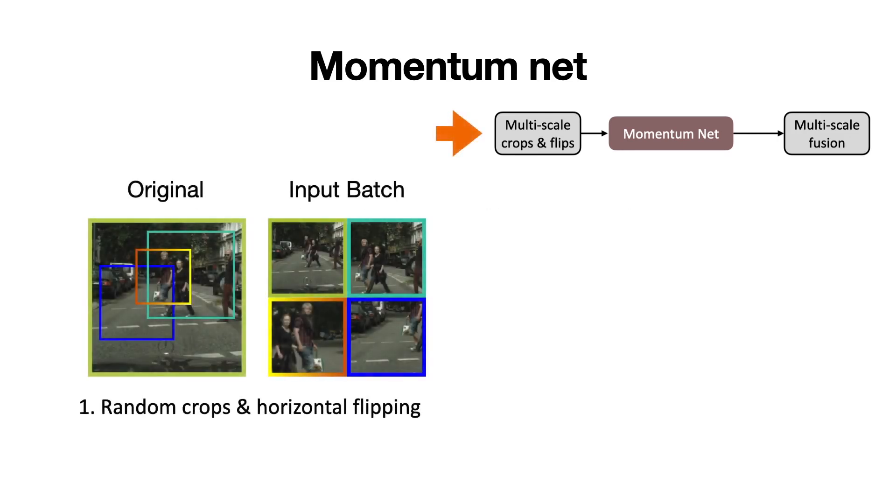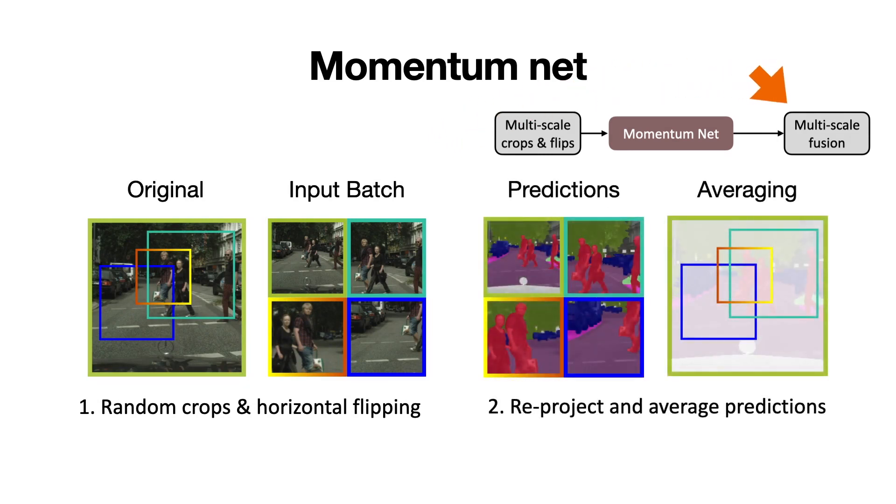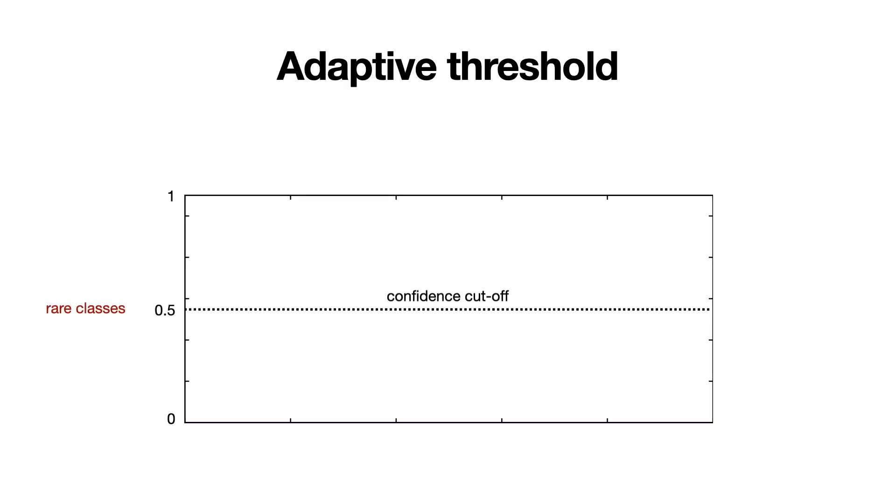To create the input batch, we sample a number of randomly flipped multi-scale crops for a given target sample. We then simply reproject and average the segmentation maps produced by the momentum network to create a refined prediction for the original sample. We use this refined prediction to select pixels for self-supervision using an adaptive threshold. Our adaptive threshold selects a lower confidence threshold for rare classes and a higher threshold for the more frequent classes.